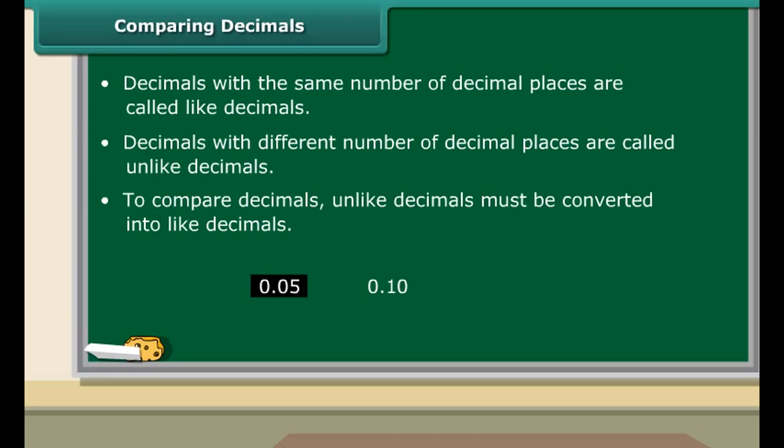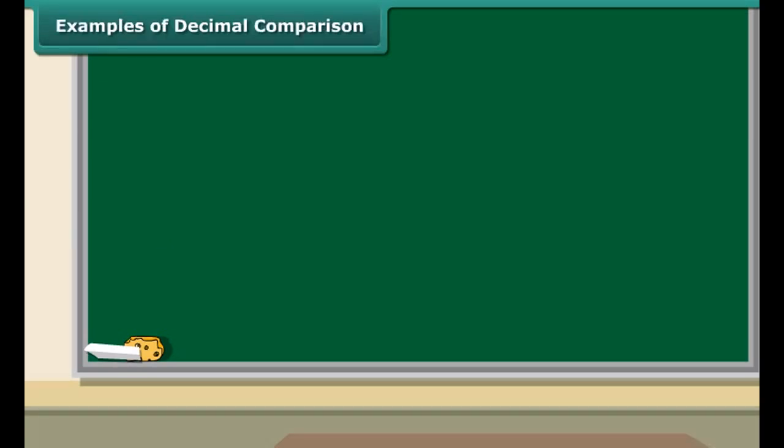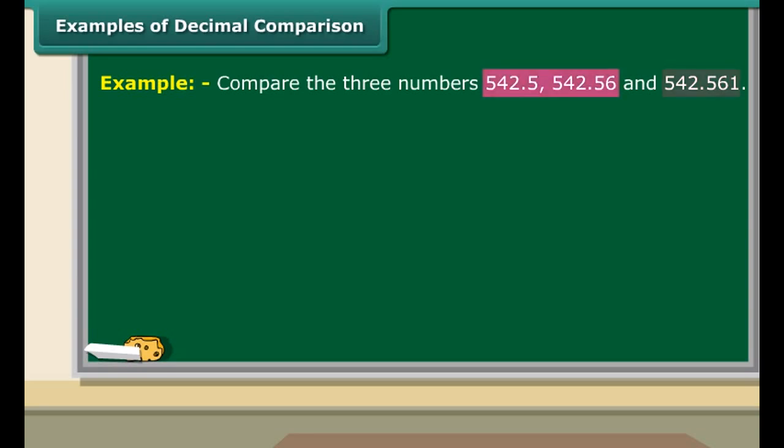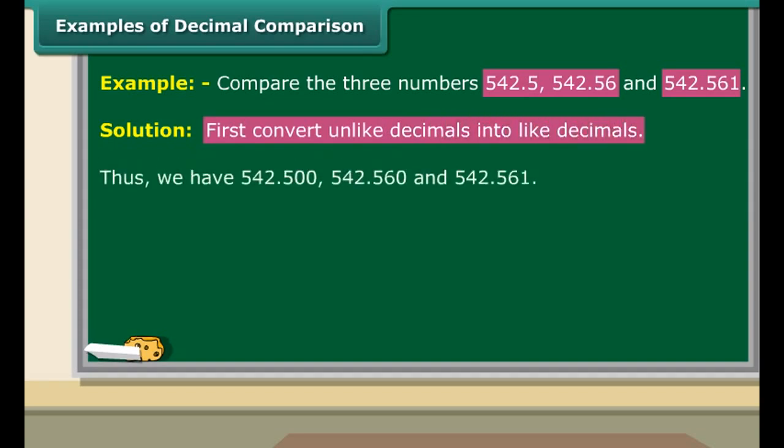Compare the three numbers: 542.5, 542.56, and 542.561. All three numbers have the same whole number part, but their decimal parts are different. Convert all unlike decimals into like decimals by adding zeros at the end. The numbers now will be 542.500, 542.560, and 542.561.